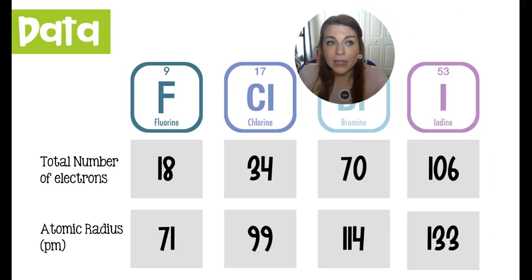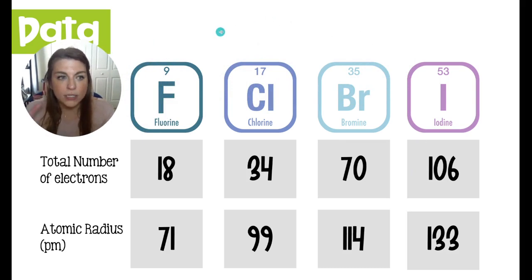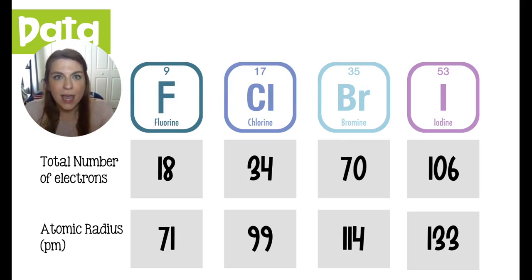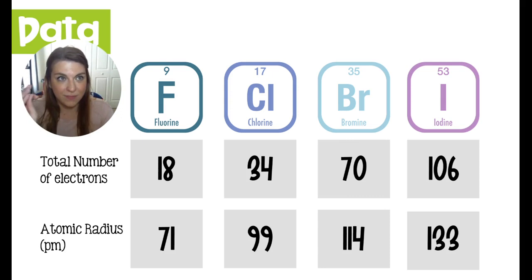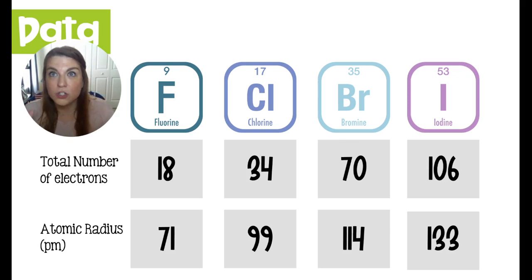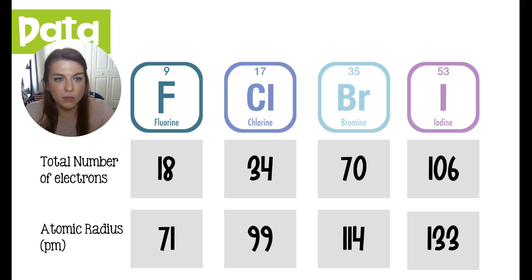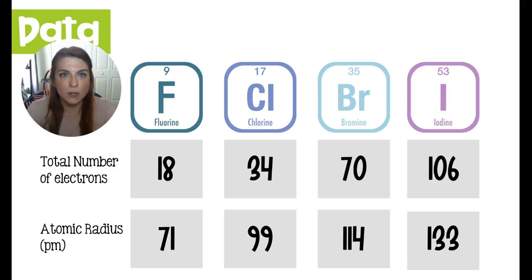Looking at the total number of electrons across these molecules: in the fluorine molecule, F bonded to F, we have a total of 18 electrons, and the atomic radius of one fluorine atom is just 71 picometers. Chlorine is going to have a total of 34 electrons — 17 per chlorine — with an atomic radius of 99, pretty big compared to fluorine. The number of electrons and the atomic radius increases going down the group.